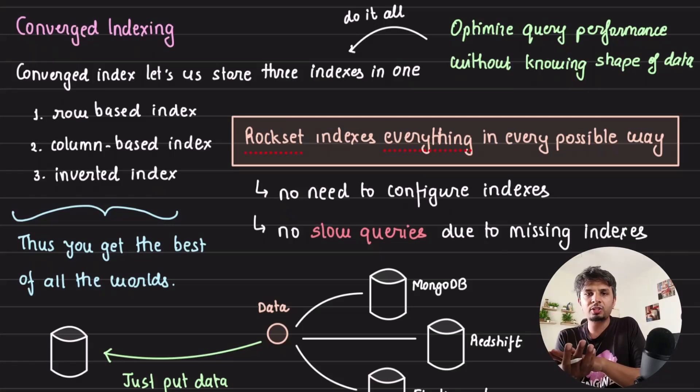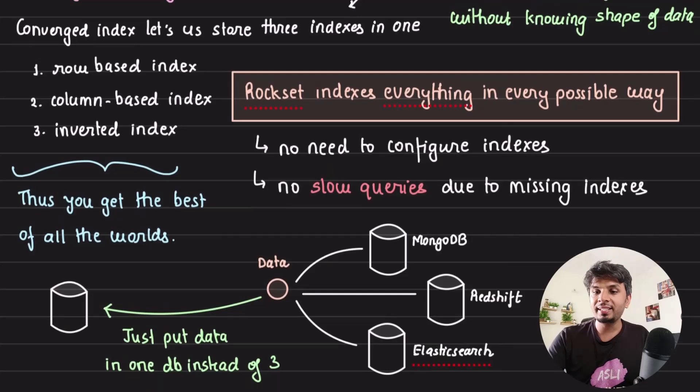The best part of the way they store the data is they call it converged index. Converged index is a type of three-in-one index. It gives you benefits of row-based index, column-based index, and inverted index. The best part of Rockset is that it indexes everything in every possible way, which means you don't need to configure what indexes you want, and you would never have a time that you're seeing a slow query because you missed an index. That typically happens in traditional databases. So you get best of all worlds.